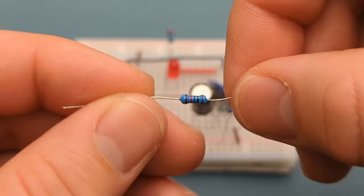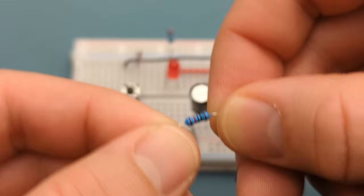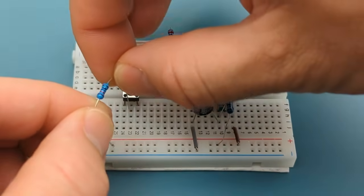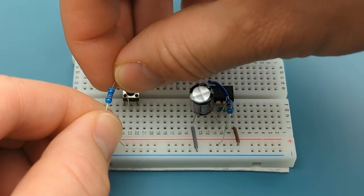Bend the ends of a 10,000 ohms resistor. Insert the 10,000 ohms resistor into the same row as the bottom leg of the switch and the positive rail.